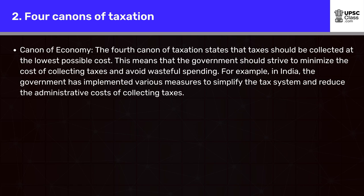The fourth canon of taxation states that taxes should be collected at the lowest possible cost. This means that the government should strive to minimize the cost of collecting taxes and avoid wasteful spending. For example, in India, the government has implemented various measures to simplify the tax system and reduce the administrative costs of collecting taxes.